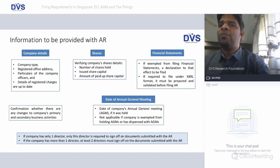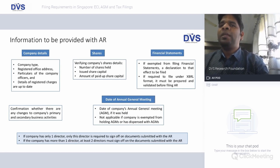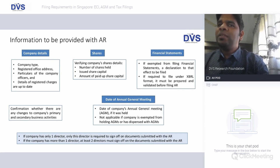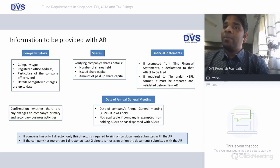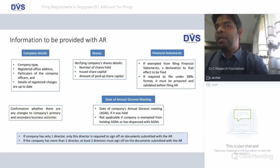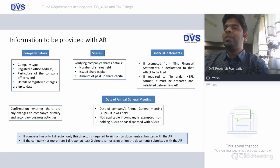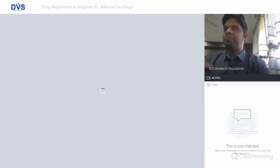The date of the AGM must be included, or noted as not applicable if the company is exempted from or has dispensed with the AGM. If the company has only one director, that director is required to sign off on the documents submitted with the annual return. If the company has more than one director, at least two directors must sign off on the documents filed with the annual return.